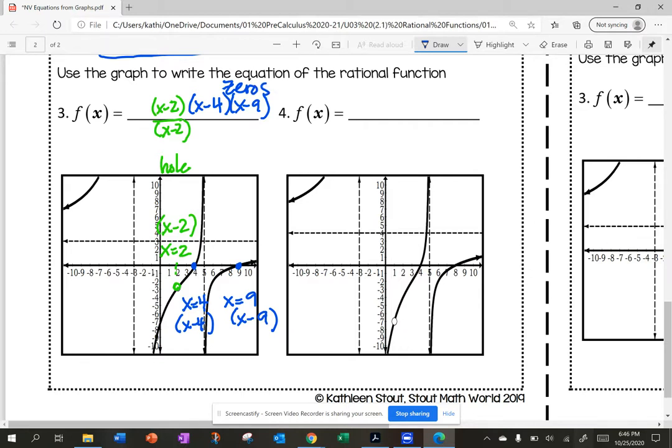Next, I see I have vertical asymptotes. So my vertical asymptotes are here at x equals negative three. So that is x plus three. And x equals five. So this is x minus five. So these are my vertical asymptotes. Vertical asymptotes go in the denominator. So x plus three and x minus five.